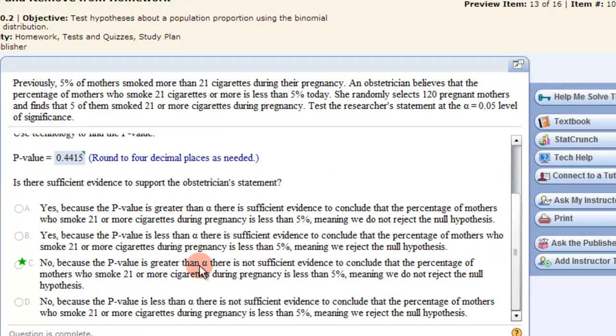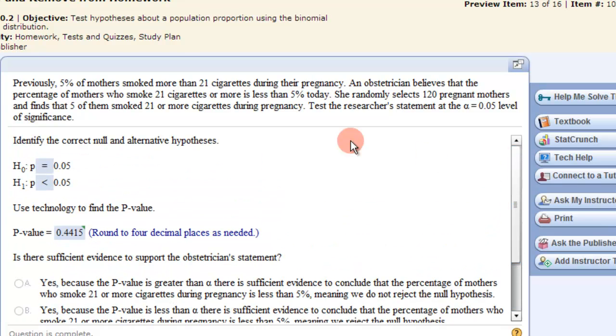No. Because the p-value is greater than alpha, there's not sufficient evidence to conclude that the percentage of mothers who smoke 21 or more cigarettes during pregnancy is less than 5%. Meaning we do not reject the null hypothesis. So that's how you can use the TI calculator in completing hypothesis testing on population proportions.